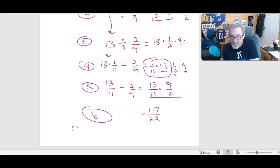So eventually, we want students to recognize and employ the algorithm that says 13/11 divided by 2/9 is the same as 13/11 times 9/2, which is 117/22.